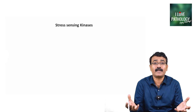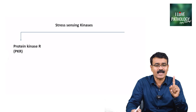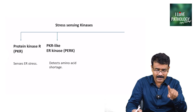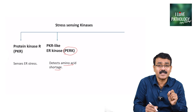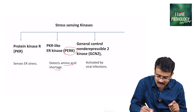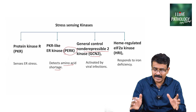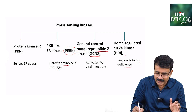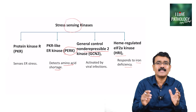Once we have stress, we should know how these stressful agents are identified. There are four important stress-sensing kinases. First is Protein Kinase R, PKR, which senses endoplasmic reticulum stress. Second is PKR-like ER kinase, PERK, which detects amino acid shortage. Third is General Control Non-derepressible 2 kinase, GCN2, activated by viral infections. Fourth is Heme-regulated EIF2-alpha kinase, HRI, which responds to iron deficiency.